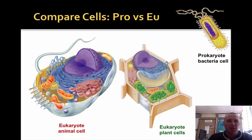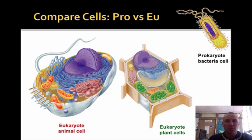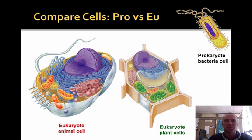If we get into cells, the first thing we need to do is realize that there are two basic classes of cells: prokaryotic cells and eukaryotic cells. When we talk about prokaryotic and eukaryotic cells, it's all about the word. The prefix 'pro' means before, 'karyote' actually means seed, but in this case we're talking about the nucleus — so prokaryotic cells do not have a nucleus.